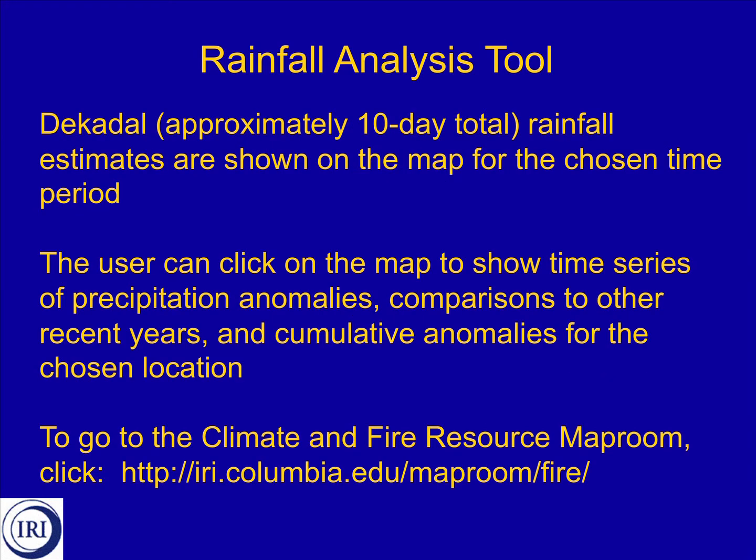DECADEL, or approximately 10-day totals of rainfall estimates, are shown on the map from the chosen time period. The user can then click on the map to show time series of precipitation anomalies, comparisons to other recent years, and cumulative anomalies for the chosen location.